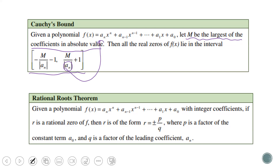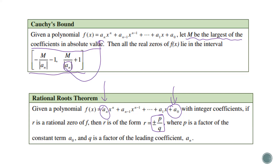In the rational roots theorem, what we do is we look at factors — numbers that divide both our constant term (a sub 0, the number added at the end) as well as our leading coefficient a sub n. Then we create ratios with those — that's where the term rational comes from. We make ratios, and those ratios are what allow us to do some experimentation to figure out what the zeros are of the function.